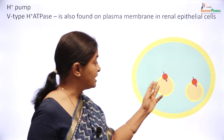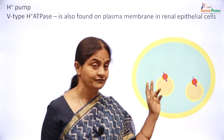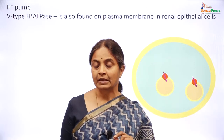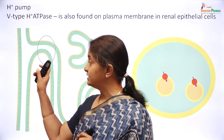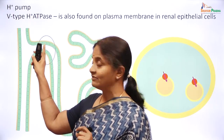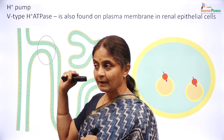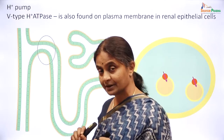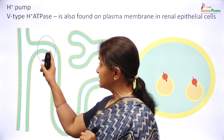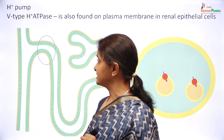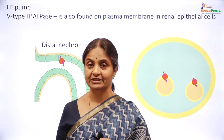The V-type ATPase proton pump is found on vesicular membranes but may also be found on the plasma membrane. In the distal renal tubular epithelium, in addition to the hydrogen-potassium pump on the luminal border, the V-type ATPase is also located on the luminal border and is in fact more important for proton secretion in that part of the tubule.